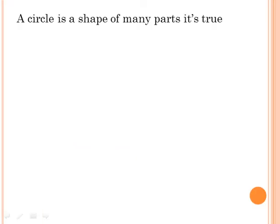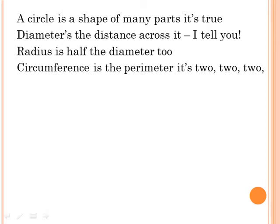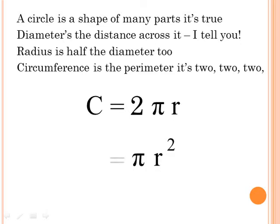A circle is a shape of many parts, it's true. Diameter's the distance across it, I tell you. Radius is half the diameter too. Circumference is the perimeter — two times pi times r is circumference, and pi times r squared is the area of a circle.